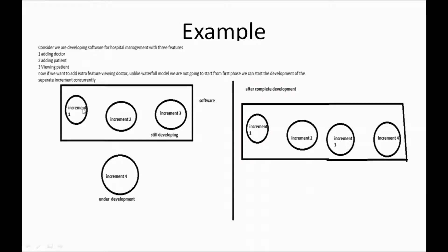If you want to add an extra feature — increment 4 — you can see that while increment 3 is still under development, increment 4 can also be under development at the same time. Parallel development is possible here. In the waterfall model that was not the case — you had to wait until all features were developed before moving on. This parallel development is the main advantage of the incremental approach.